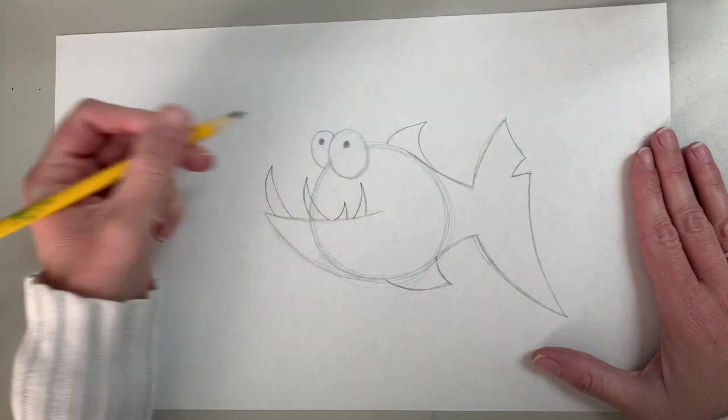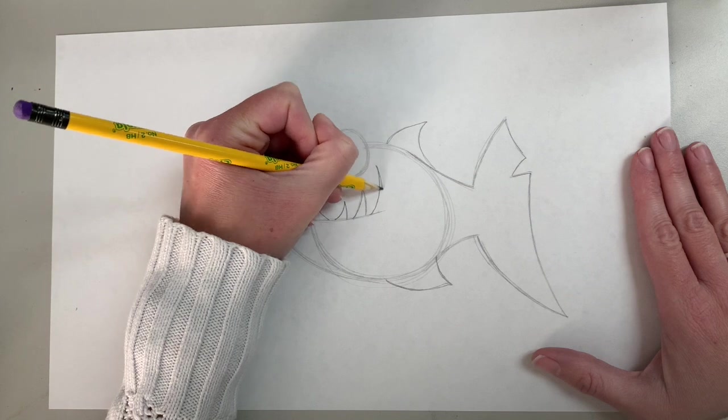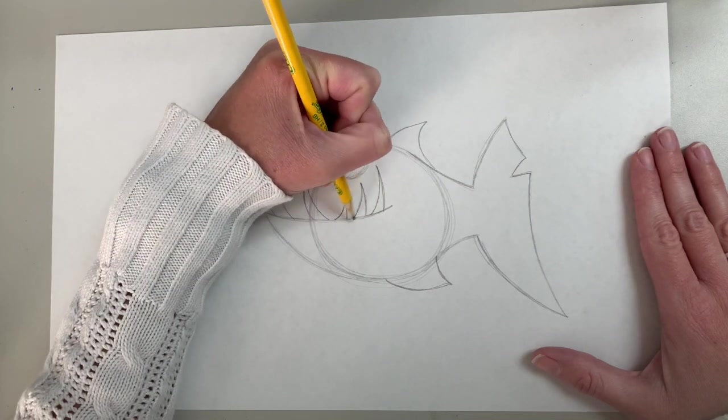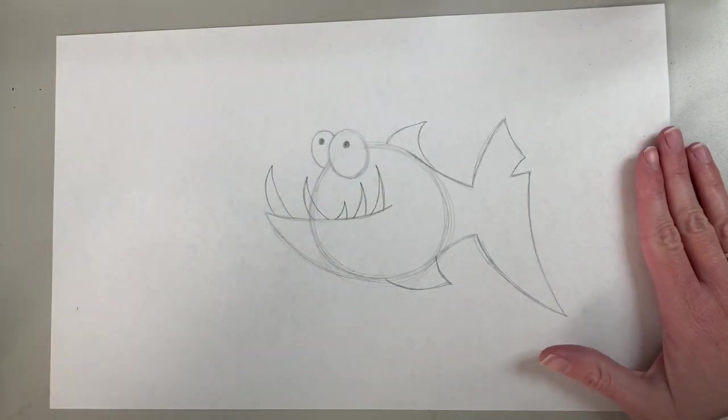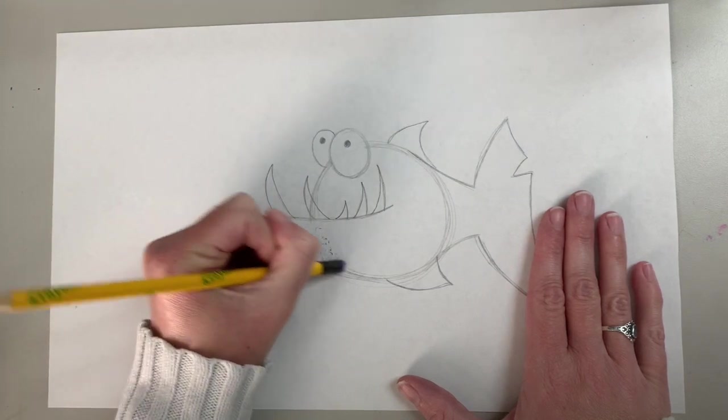Not too high though, we don't want it to come in and poke himself in the eye. And then one more tooth here. If we need to extend our mouth a little bit, we can do that. And there we have it. Our funny, fun fish.